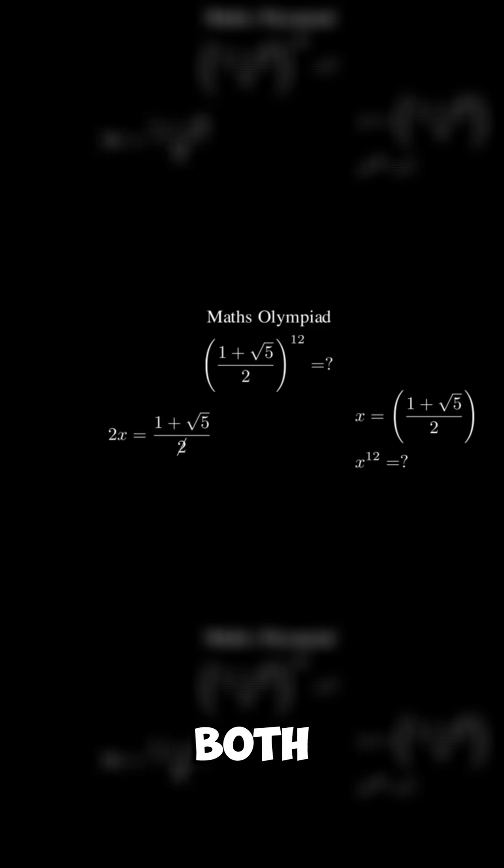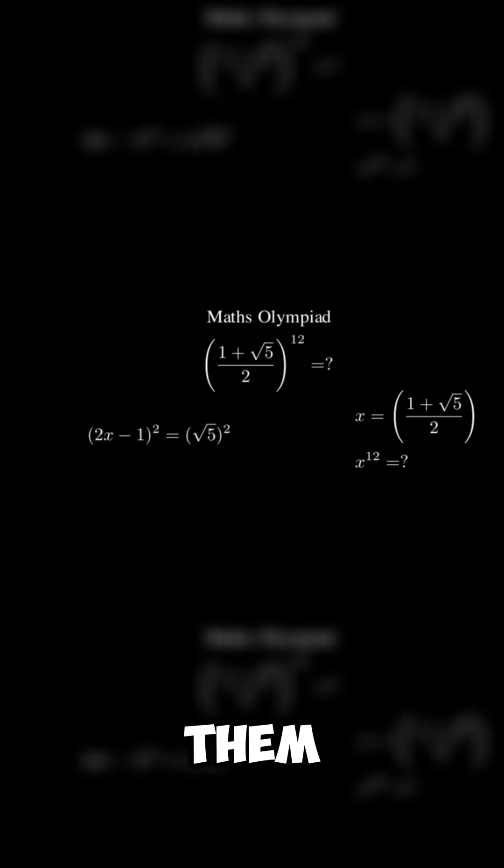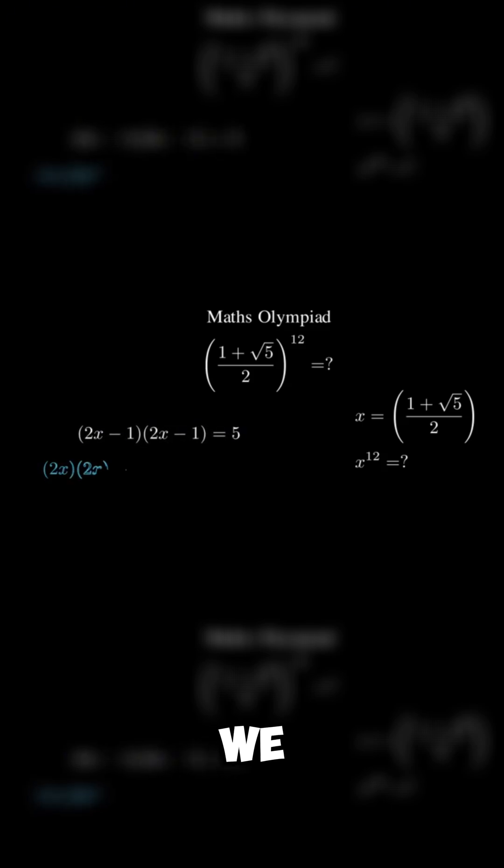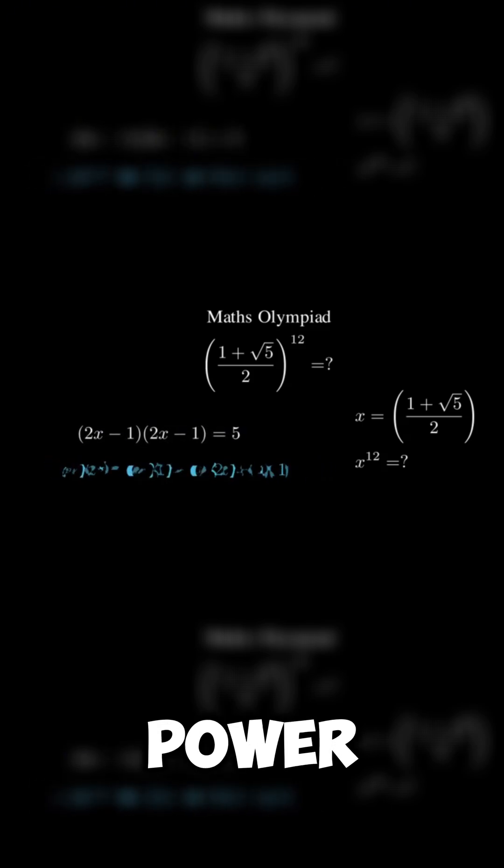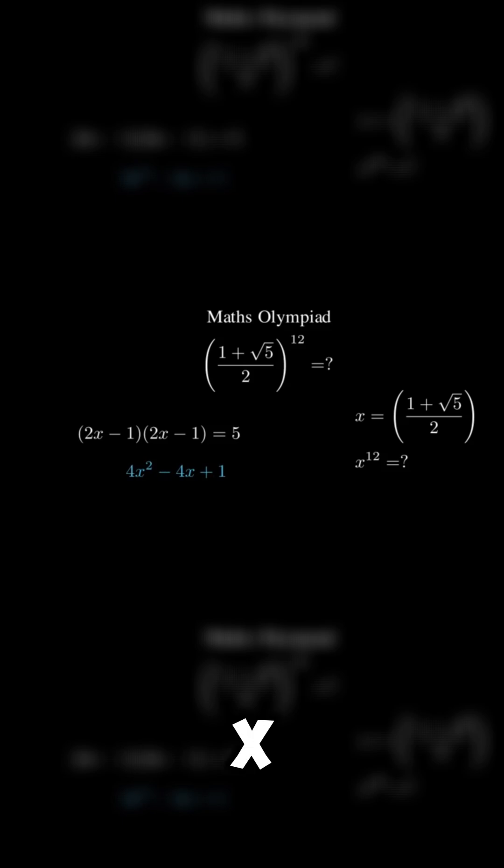First we're going to multiply both sides by 2. After that we just subtract both sides by 1 and then square them. By expanding the left side we should get 4x power of 2 minus 4x plus 1.